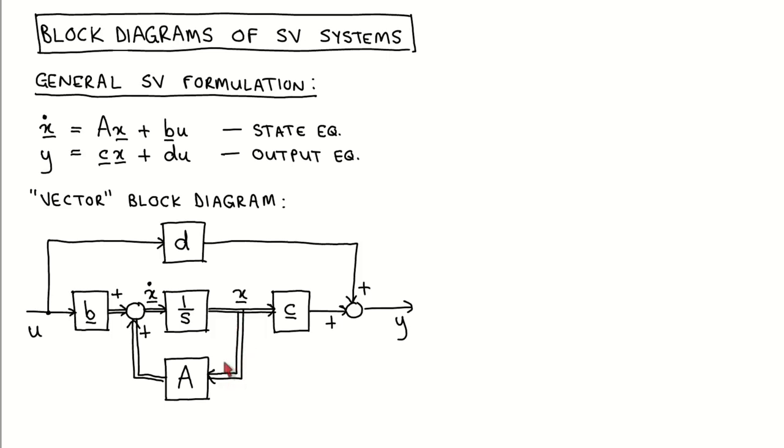Let's go through the block diagram and check that it is indeed equivalent to the state variable equations. In the center of the block diagram is an integration block with its output being the state vector. The input to the integrator is therefore the derivative of the state vector.